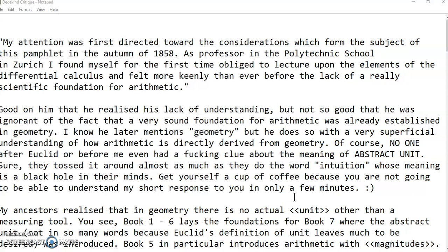As I showed you in the previous video, I talked about the abstract unit, the geometric and the algebraic versions of the unit. I also talked about physical units. I know he later mentions geometry, but he does so with a very superficial understanding of how arithmetic is directly derived from geometry. Of course, no one after Euclid or before me even had a clue about the meaning of the abstract unit. Sure, they tossed it around almost as much as they do the word intuition, whose meaning is a black hole in their minds.